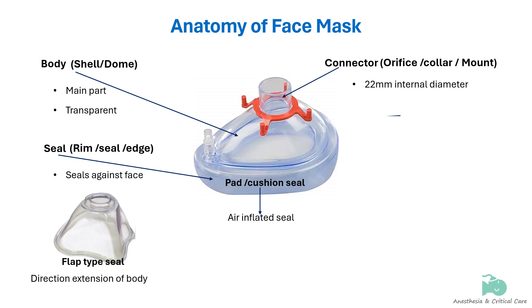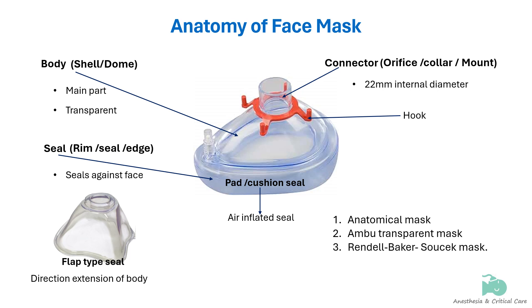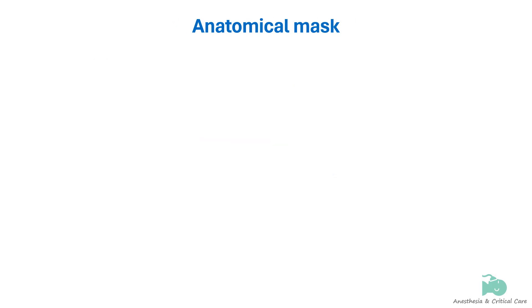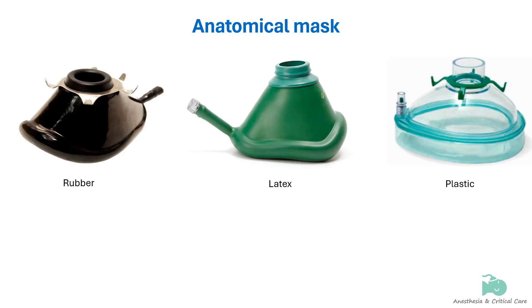A ring with hooks may be placed around the connector to allow a mask strap to be attached. Face masks can be grouped as anatomical mask, Ambu transparent mask, and Rendell Baker-Sousek mask. Anatomical masks can be made of black rubber, latex, or plastic. The shape conforms to the contour of the face and has a padded seal. Of the many types available, the anatomical face mask is most commonly used for anesthesia. The seal can get deflated with overuse over time and a proper seal may not be achieved.